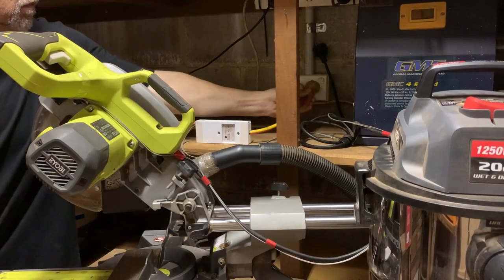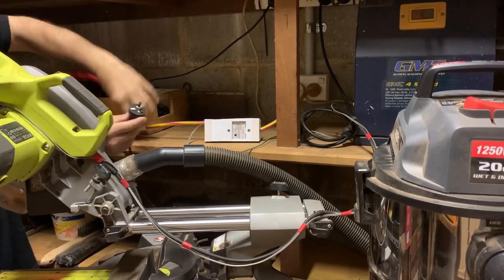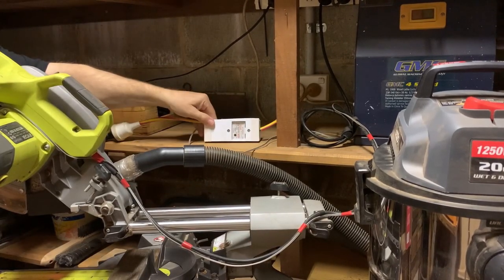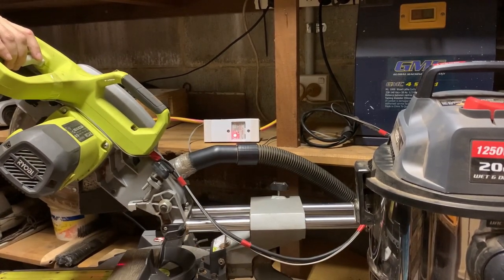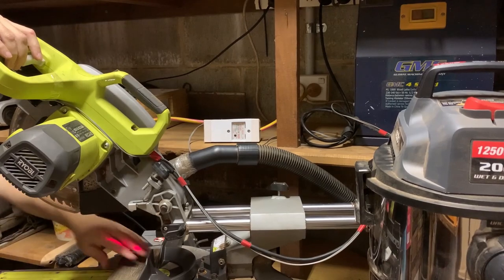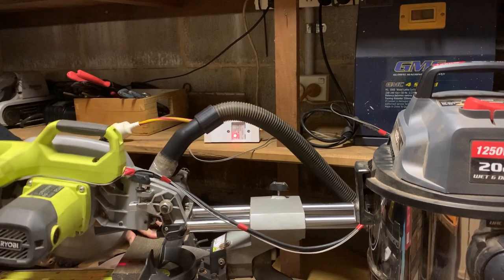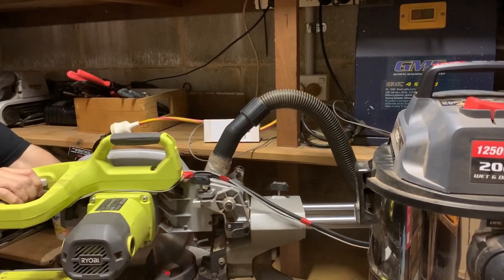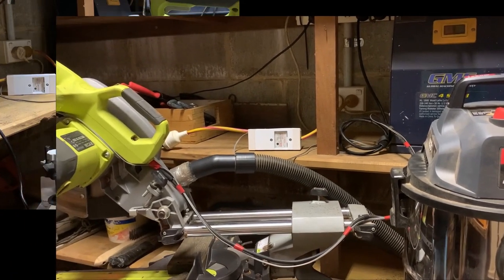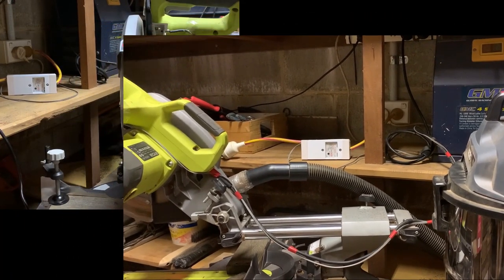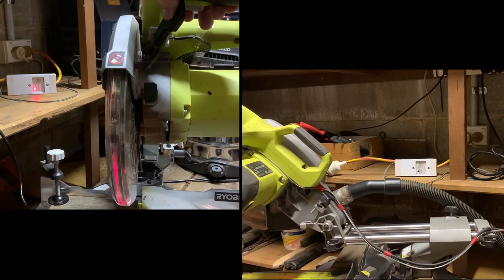You plug the SSR into the AC mains power, and then the vacuum cleaner, or other AC appliance, into the other end. Now you have control over the AC powered appliance. This relatively simple modification now means that the blade guard release also turns on the dust extraction without having to physically modify the saw.